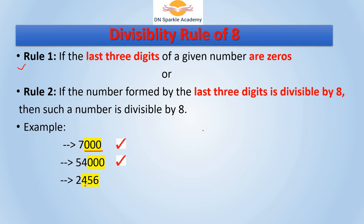Now for the next number, the last 3 digits are non-zero, so we have to apply rule number 2. Rule number 2 says the number formed by the last 3 digits must be divisible by 8. Here we check whether 456 is divisible by 8. Since 456 is divisible by 8, the whole number is divisible by 8.